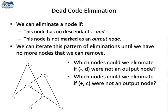Let's imagine that some nodes are marked as outputs. In this way, output nodes cannot be eliminated. If they have no use, they might be used outside the basic block. In this example, nodes 5 and 6 are output nodes. Now, if a node has no descendant and it's not an output node, then it can be eliminated. This is called dead code elimination.